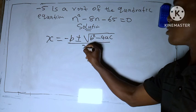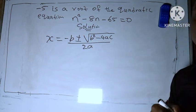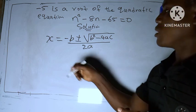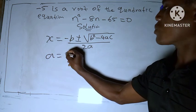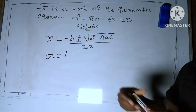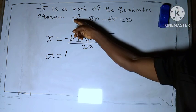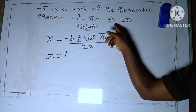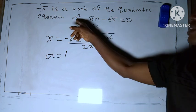All over 2a, right. Okay, let's substitute. Let's make our a equal to one. A is the first coefficient, b is the second one, and c is the third one.